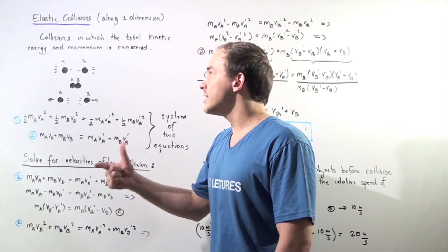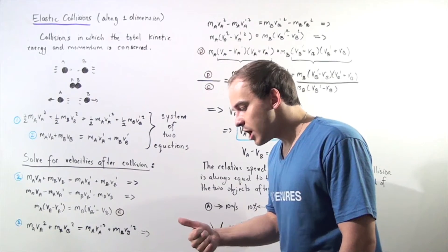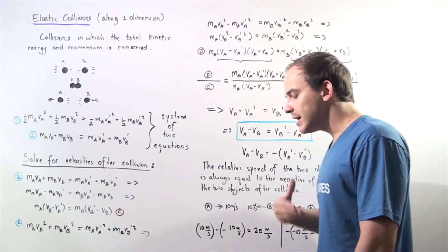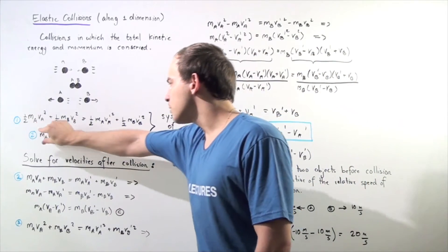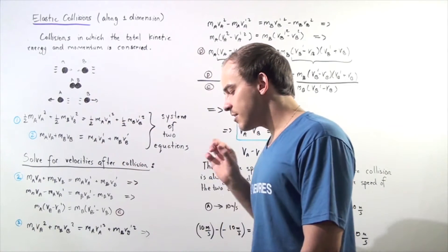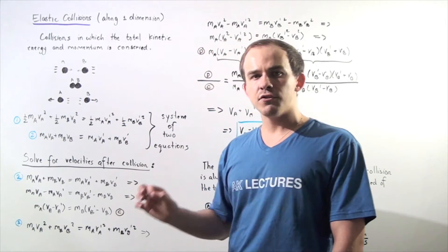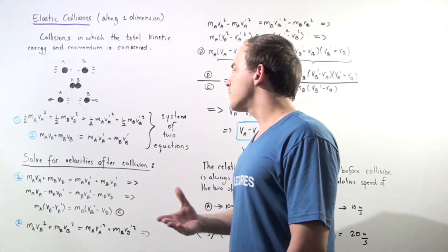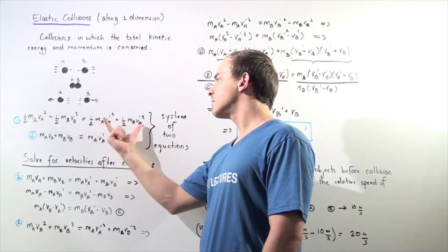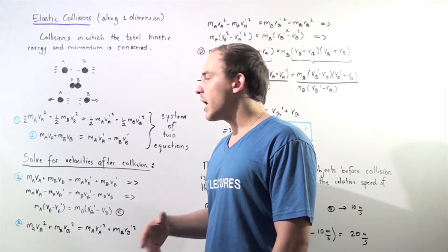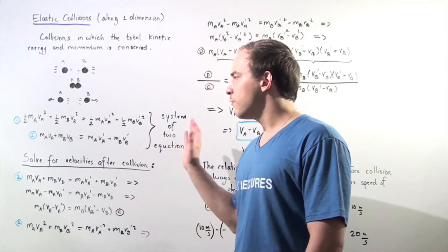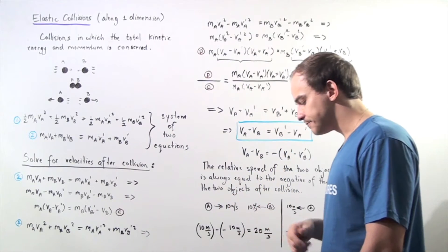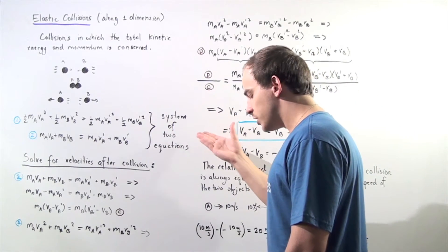Because our collision is elastic, we have the conservation of kinetic energy — equation one — and the conservation of momentum — equation two. Equation one states that the sum of the kinetic energies of the two objects before the collision equals the sum after. Likewise, the sum of the momenta of the two objects before the collision equals the sum after.